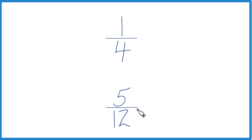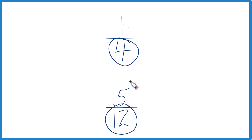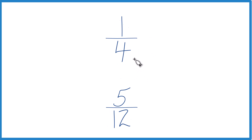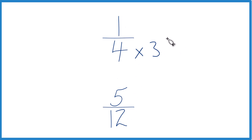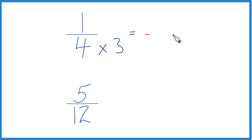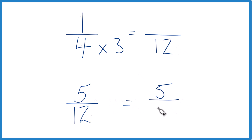We could also find a common denominator. Right now we have 4 and 12, but if that was the same, we could just compare the numerators and figure this out. Let's do that. 4 goes into 12 three times, so I could multiply 4 times 3, and that would give me 12 as my denominator. Down here it's already 12, so let's just keep it the same: 5/12.